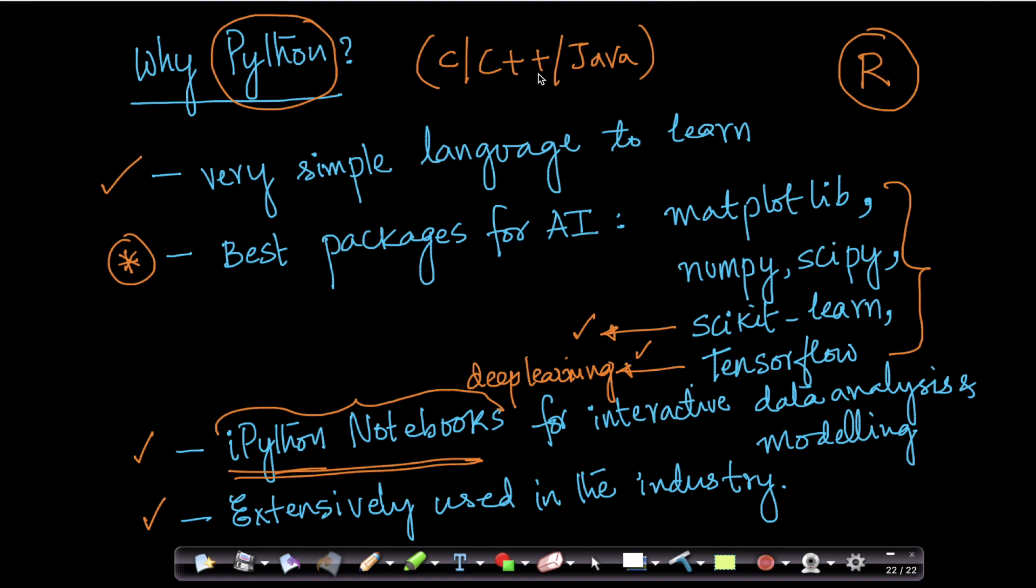So if you already know C, C++, Java, you can tomorrow say I also know Python. But if you say I know R, okay, R is used only in a very limited set of applications. But Python is a very general purpose language. Looking at all of these reasons, we picked up Python over any of your traditional languages like C, C++, Java or R.